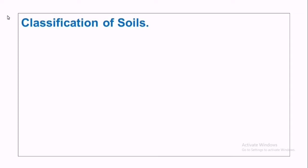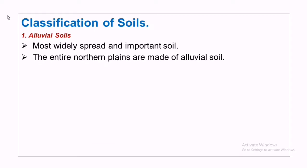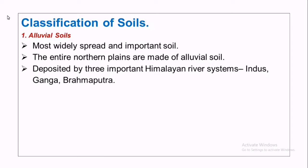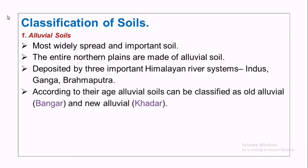Classification of soils: First, alluvial soil — the most widely spread and important soil. The entire northern plains are covered with alluvial soil, deposited by the Himalayan rivers: Indus, Ganga, and Brahmaputra. According to their age, alluvial soils are divided into two types: old alluvial — bangar — and new alluvial — khadar.